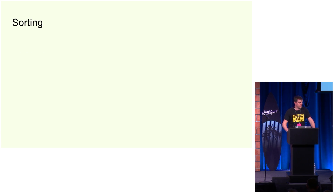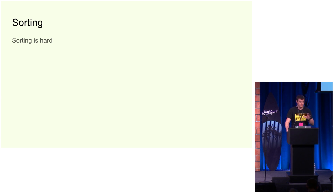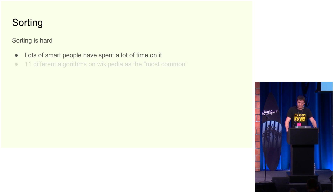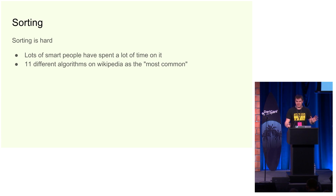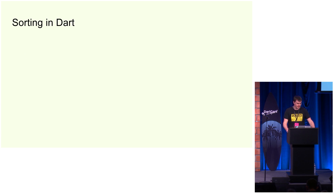So let's talk about sorting today. Sorting is one of those hard problems that a lot of really smart people have spent a lot of hard time figuring out. I did a quick search, and Wikipedia has 11 different algorithms for sorting based on how big it is and how fast you want it, and a bunch of different things that you have to figure out if you want to use a good sorting algorithm.